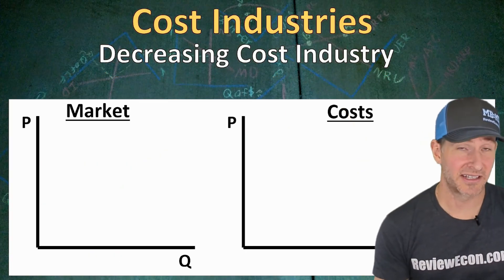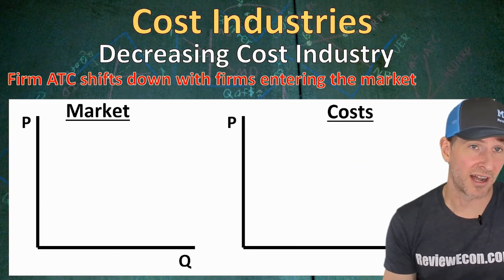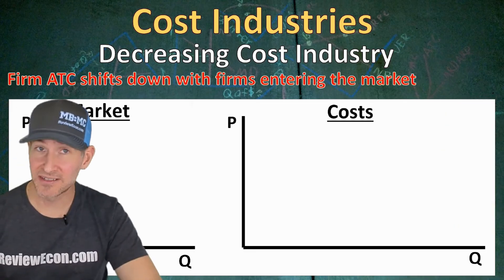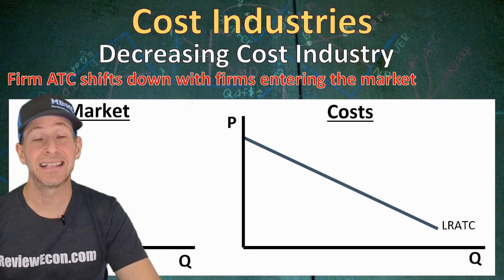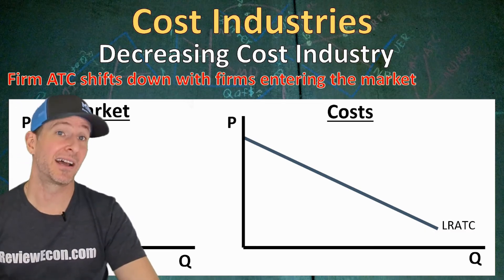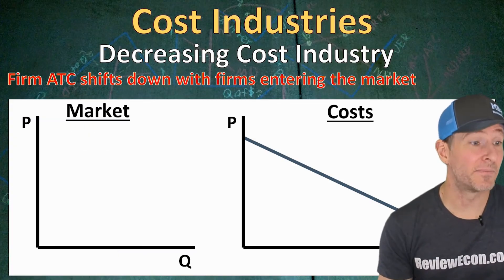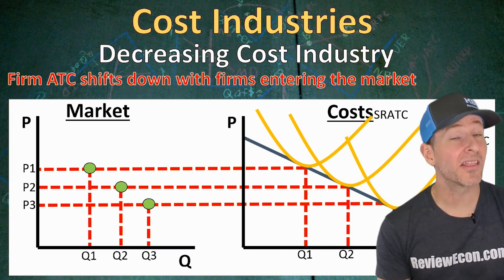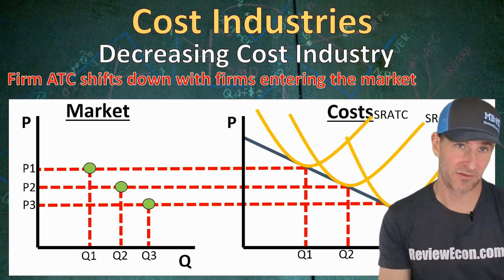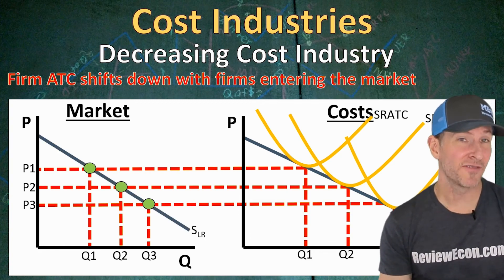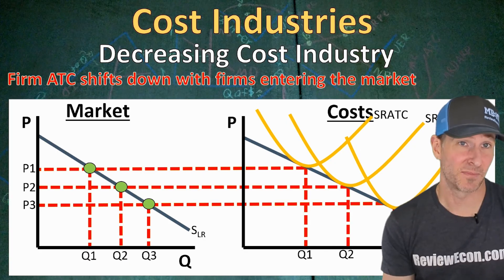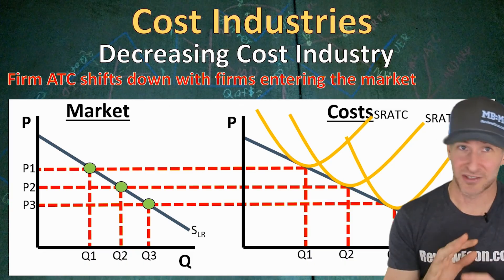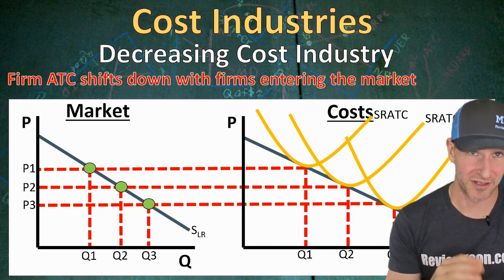Finally, we have our decreasing cost industry. In this industry, firms' average total cost curves are going to shift downward as new firms enter the market, because the industry's long-run average total cost curve is downward sloping. The industry is experiencing economies of scale, and so as the market increases output, the average total cost and the market's price will shift down. This means the long-run supply curve within the market is actually downward sloping — and this is the only reference to a downward-sloping supply curve within this class, but that's only in the long run. The rest of the supply curves slope upward like we expect.